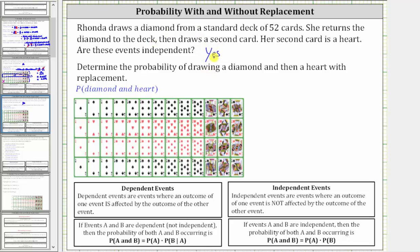Because the events are independent, we use this formula to find the probability that both occur: if events A and B are independent, then the probability of both occurring is equal to the probability of A times the probability of B. So in this case, because we have replacement, the probability of a diamond and a heart is equal to the probability of a diamond times the probability of a heart.